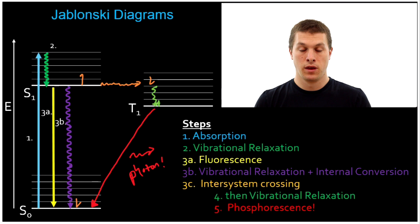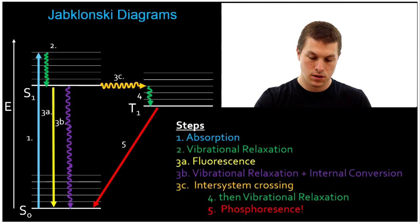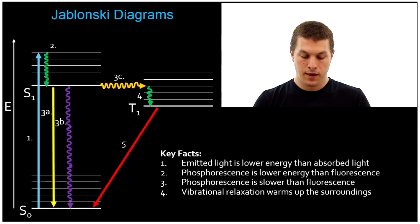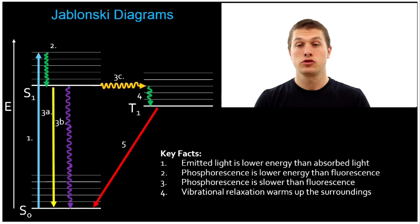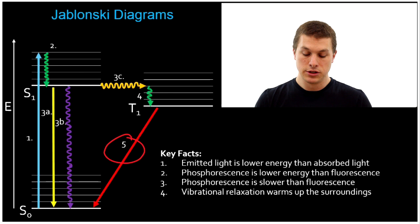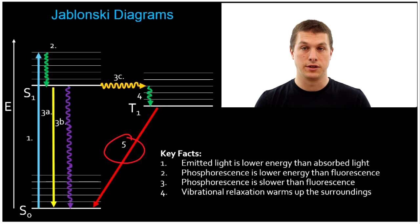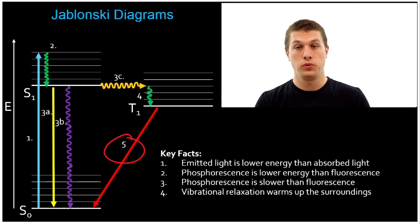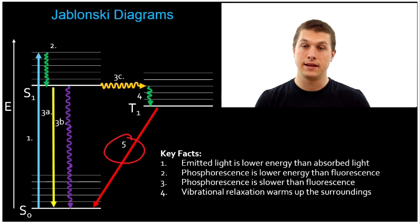This is your Jablonski diagram. One key fact: our emitted light is always lower in energy than our absorbed light, because some of the energy will be given off as vibrational relaxation. Phosphorescence is lower energy than fluorescence, because additional energy has been given off as vibrational relaxation. And phosphorescence is slower than fluorescence, because before it can relax, the electron has to spin-flip, and that takes time. Finally, vibrational relaxation will always warm up our surroundings — our energy that comes in as light will be split between vibrational energy given off to the surroundings as heat, or light that comes back out, but all of our energy has to be accounted for and conserved.